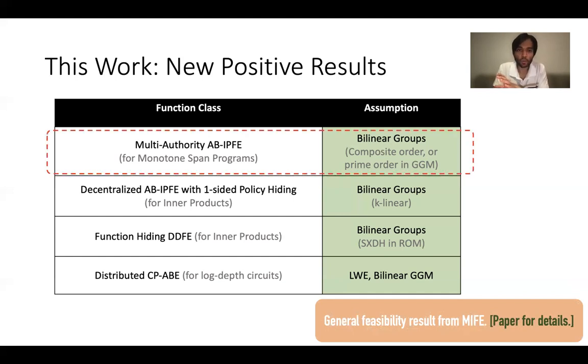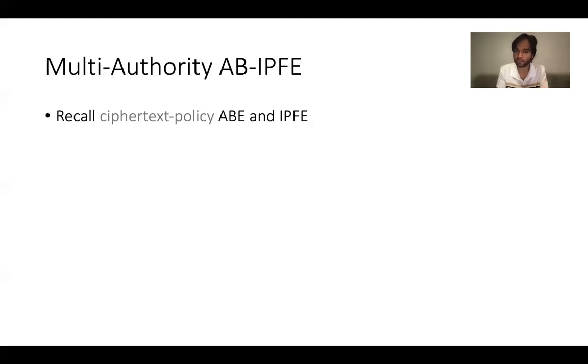I will now focus on the first part of the results: designing a multi-authority attribute-based inner product function encryption (MA-ABIPFE) system for monotone span programs. To construct this, I first need to define what multi-authority attribute-based IPFE is, as this has not been defined previously. Let us recall ciphertext-policy attribute-based encryption and inner product function encryption.